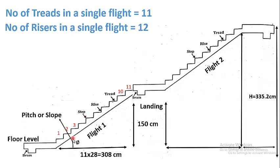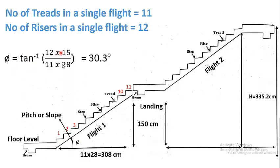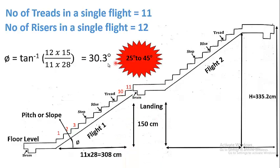Now to verify that the slope or pitch lies within the acceptable range for good stairs, we use the formula: φ = tan⁻¹(riser / thread). For one flight: 12 risers × 15 cm = 180 cm total rise, and 11 threads × 28 cm = 308 cm total run. This gives φ = 30.3 degrees, which lies within the required range of 25 to 45 degrees. The stairs are fully compliant with all requirements.